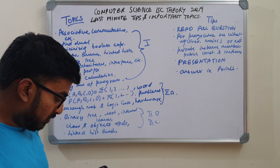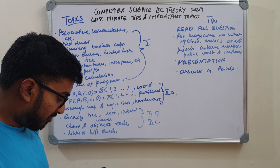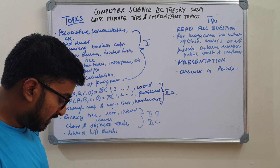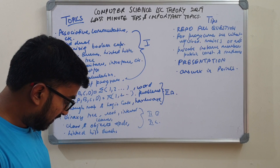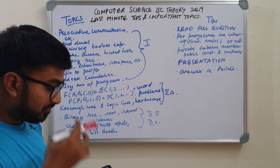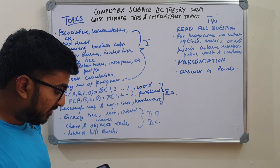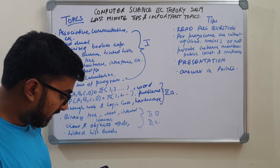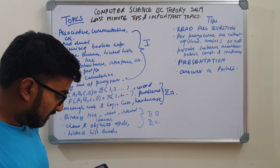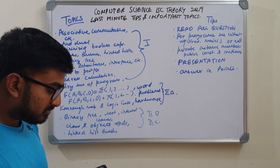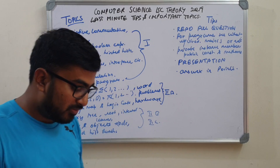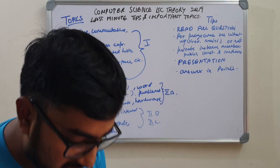The theory paper is split into two parts. Part one usually has three questions. Part two has three sections: Section A, Section B, and Section C. We'll go part by part and section by section.